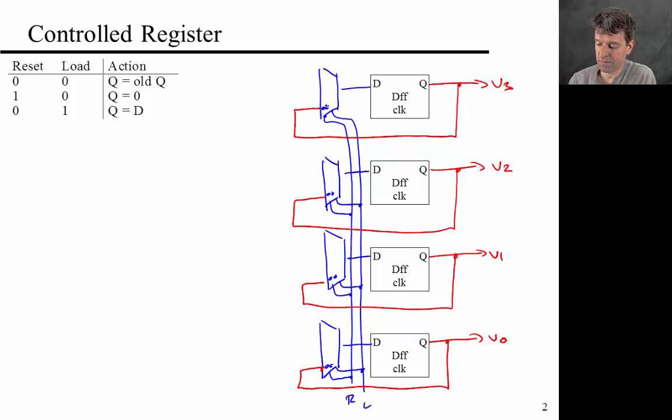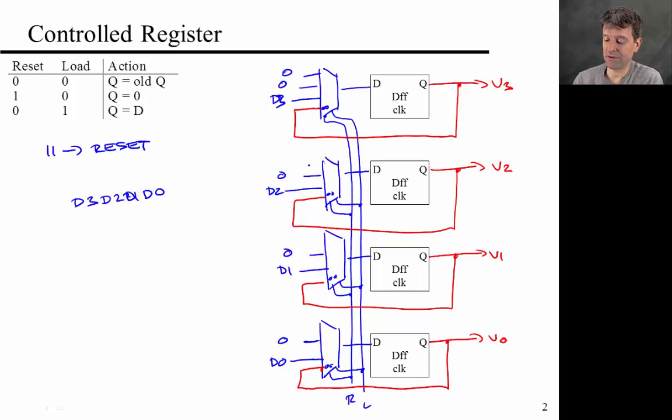Now for position zero one, you're loading new data. So basically here the next input is just going to be D0, D1, D2, D3, where the data that you're going to load is the four bit number D3, D2, D1, D0. For one zero, you're resetting, so what you're inputting here is just a zero. And then the last combination, one one, is not defined here, so you can make any choice you like. So I'm going to say that one one is also a reset, and so I'm just going to input zero here again.